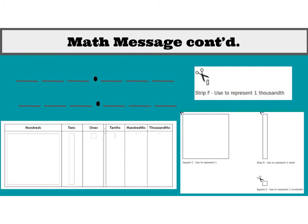So why am I showing you all of these pictures? We are going to relate that to the place value system. If we take a look at this chart, I have hundreds, tens, ones, here is my decimal place, and then we have tenths, hundredths, and thousandths.